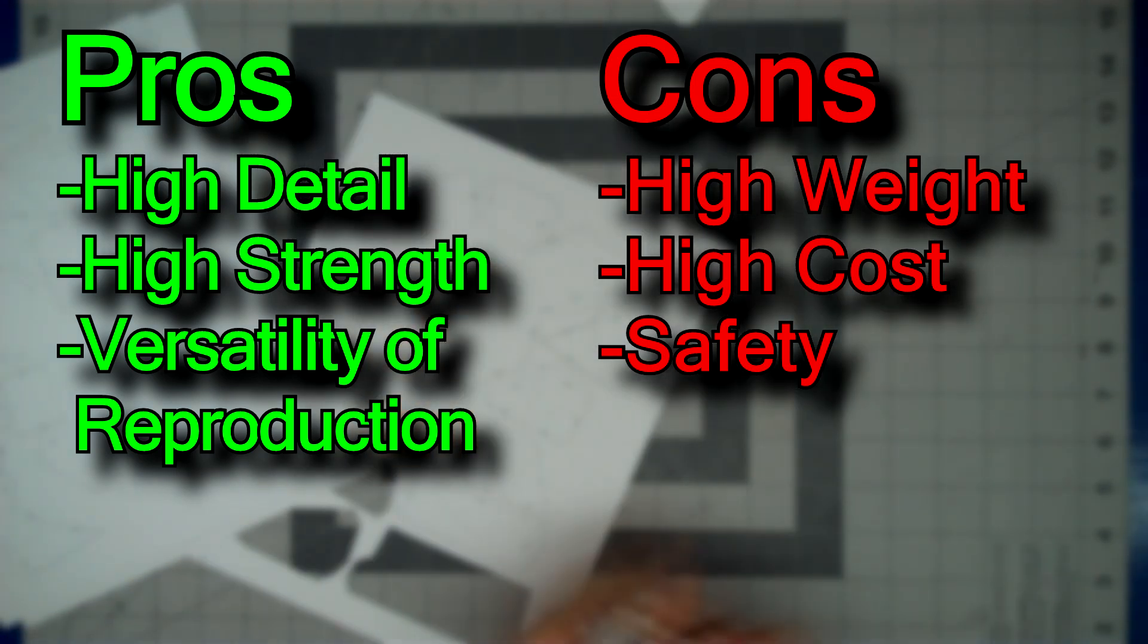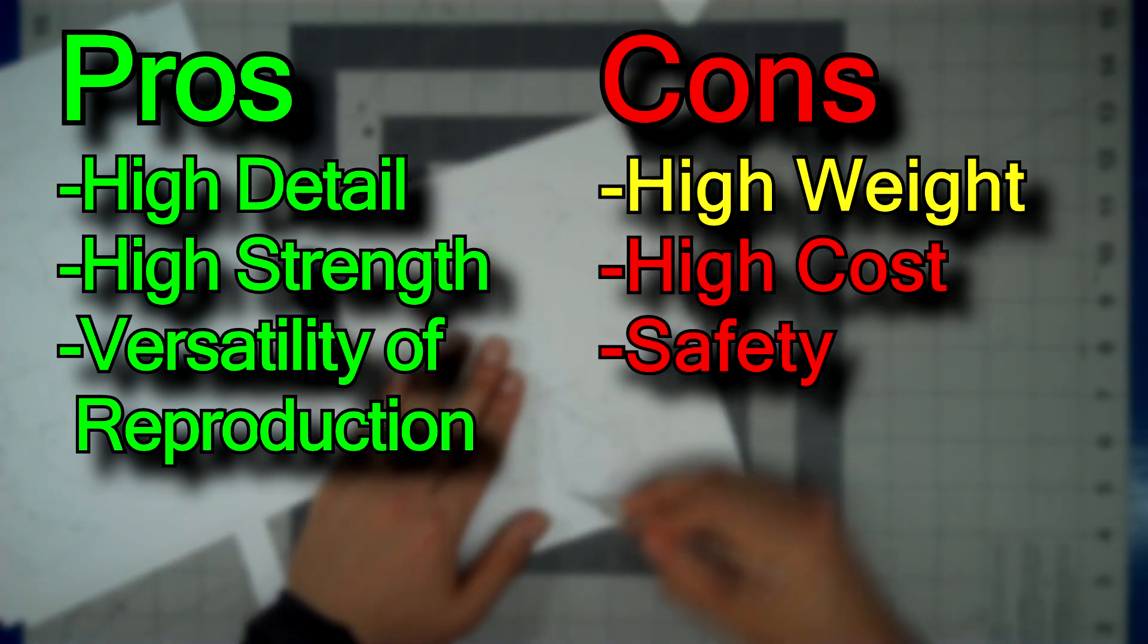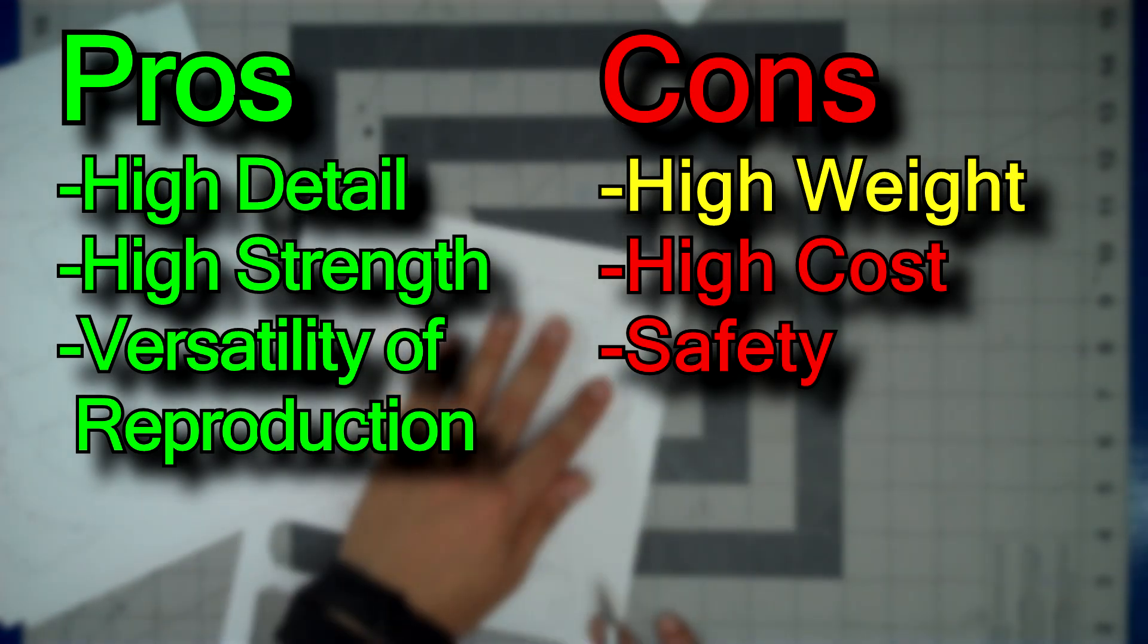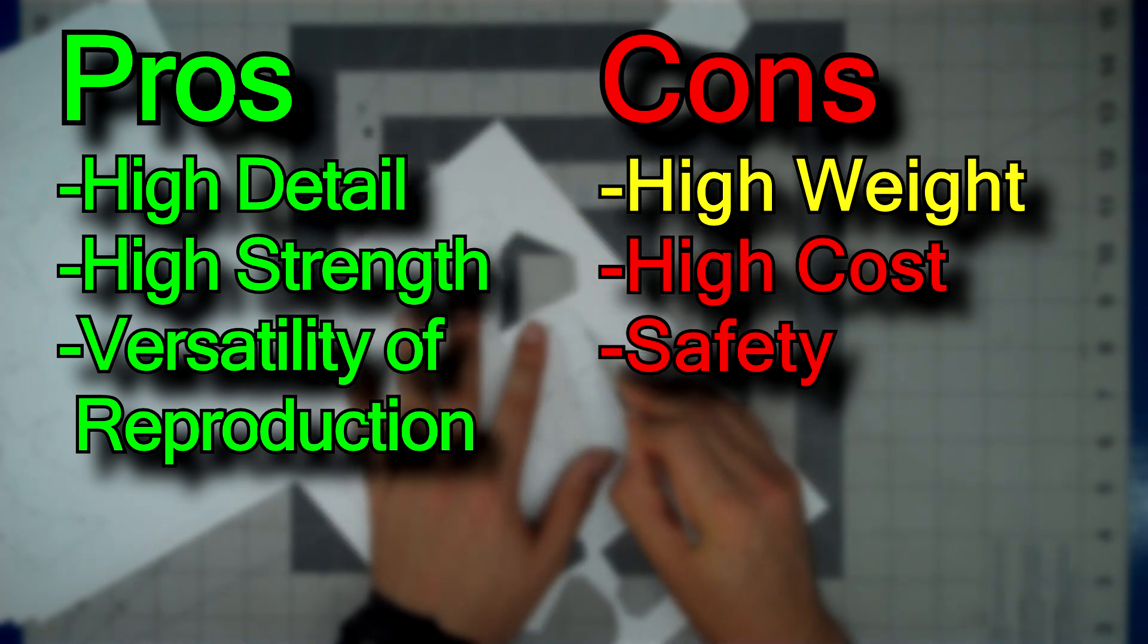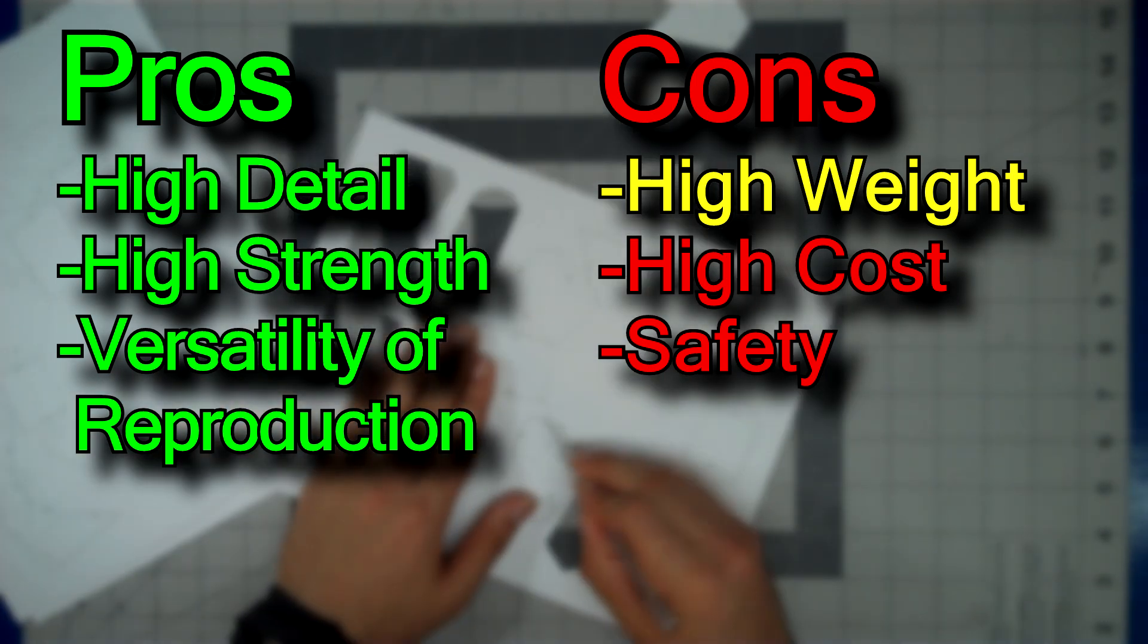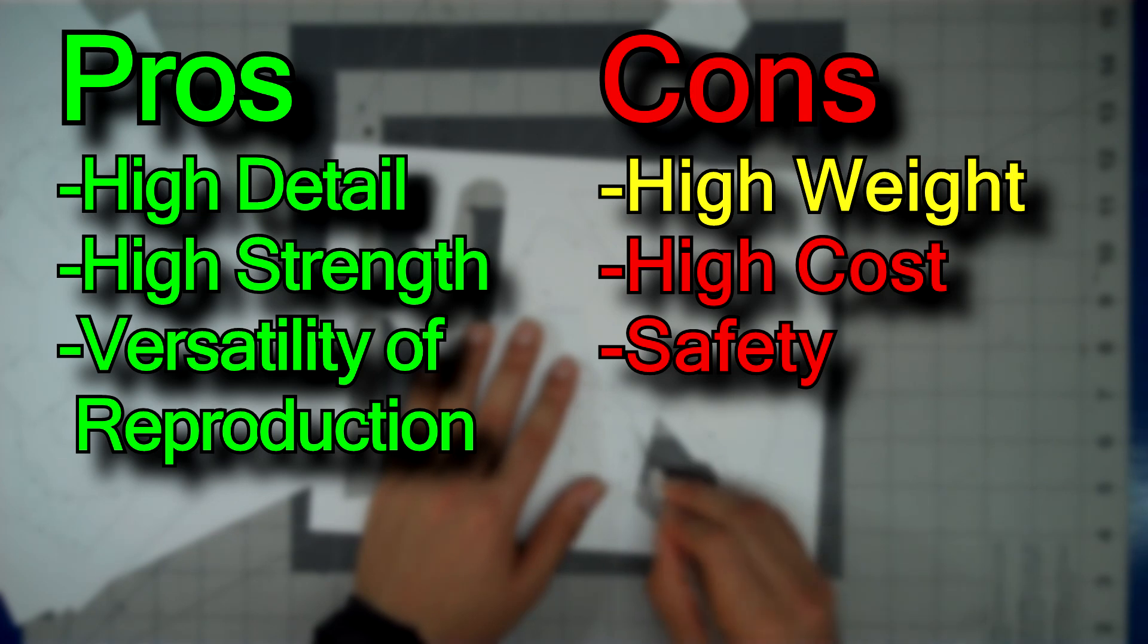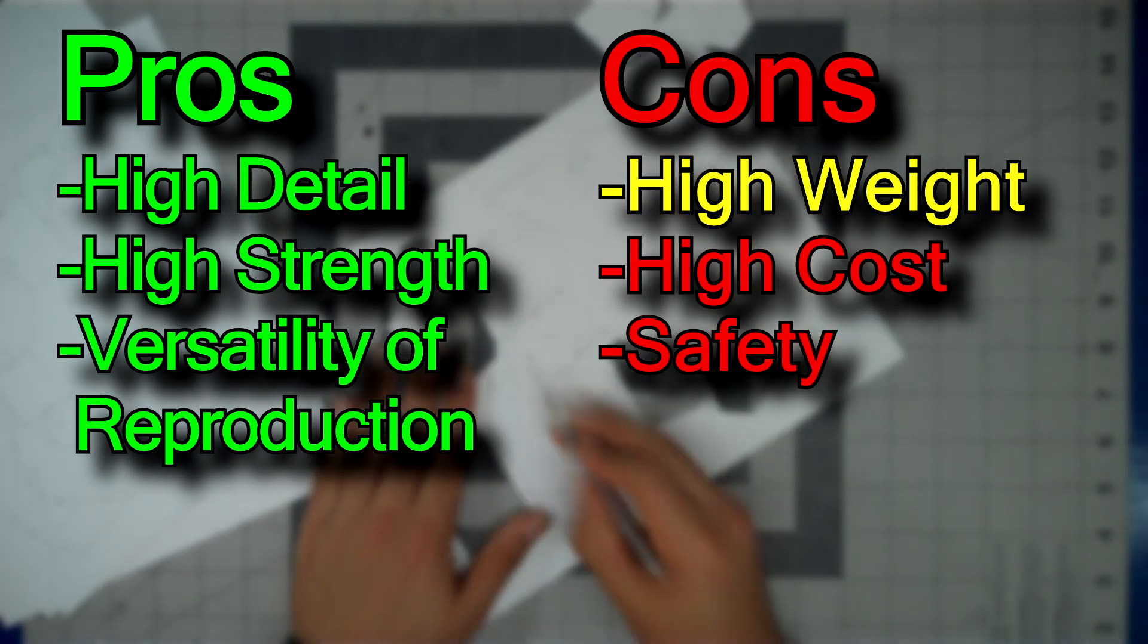Now let's move on to some cons. High weight. The layers of fiberglass and resin, while they will provide high strength, come at the cost of adding quite a bit of weight to the armor. And when compared to other methods such as foam, the difference in weight can be significant.